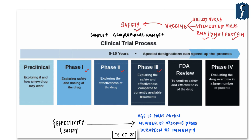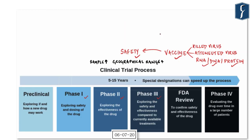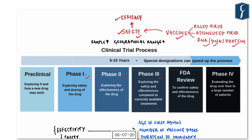Safety means whether the vaccine is safe after injection and what side effects it induces. But just being harmless is not sufficient — the mains criterion is efficacy, which means whether the vaccine induces the desired immune response. Phase 1, 2, and 3 trials differ in sample size and geographical range. As we move from Phase 1 to Phase 3, the sample size increases and the geographical coverage expands.